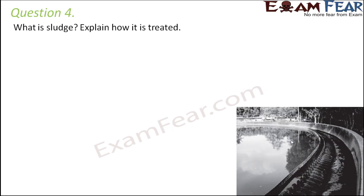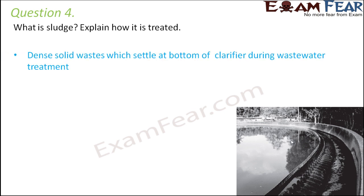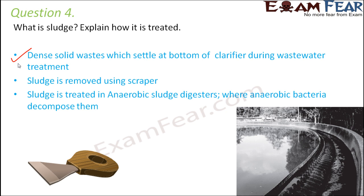Question number 4: What is sludge? Explain how it is treated. Sludge is the dense solid wastes which settle at the bottom of the clarifier during wastewater treatment. It contains solid organic wastes. It is removed from the clarifier using a scraper and then put into anaerobic sludge digesters, which contain anaerobic bacteria that decompose the sludge in the absence of oxygen.